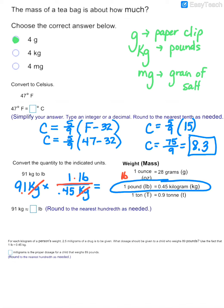So 91 divided by 0.45, and we're going to round it to the nearest hundredth. So that would be two decimal places. So 202.22 pounds.